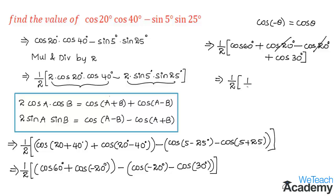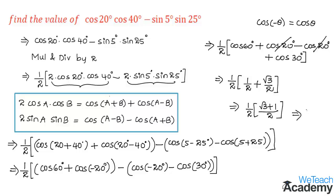After cancellation we get (1/2) × [cos 60° + cos 30°], which is (1/2) × [1/2 + √3/2]. Taking LCM, this becomes (1/2) × [(√3+1)/2], and multiplying gives (√3+1)/4. So the value of cos 20°·cos 40° − sin 5°·sin 25° = (√3+1)/4.